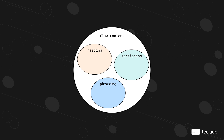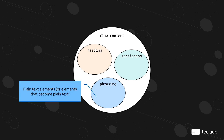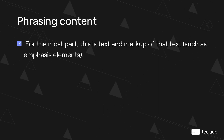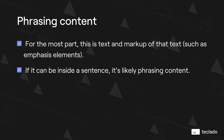Just to make sure this is clear: sectioning, heading, and phrasing content are all subcategories of flow content. Phrasing content consists of plain text elements or elements that become plain text if the associated resource is not available. For the most part, phrasing content is text and the markup of that text — for example, emphasis elements or strong elements. If it can be inside a sentence, the element is likely phrasing content.